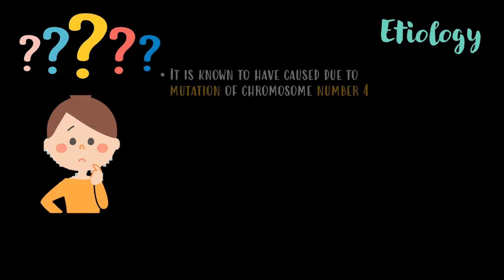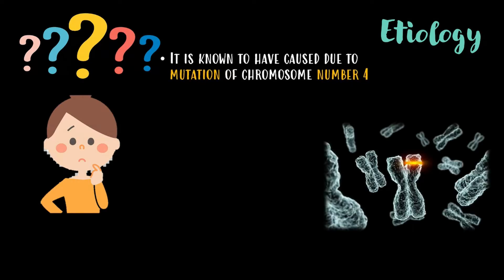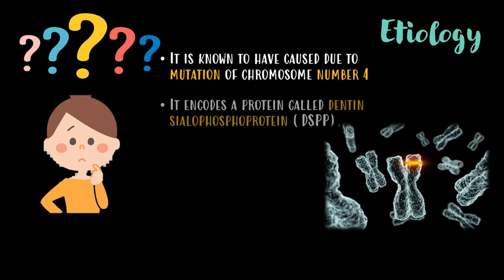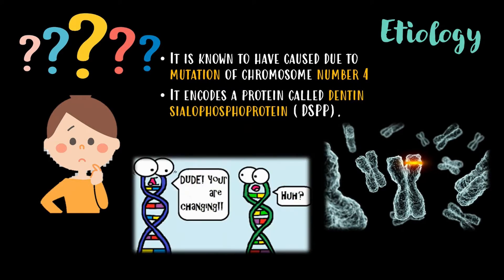Dentinogenesis imperfecta is known to be caused by a mutation of chromosome number 4, which encodes a protein called dentin sialophosphoprotein (DSPP).